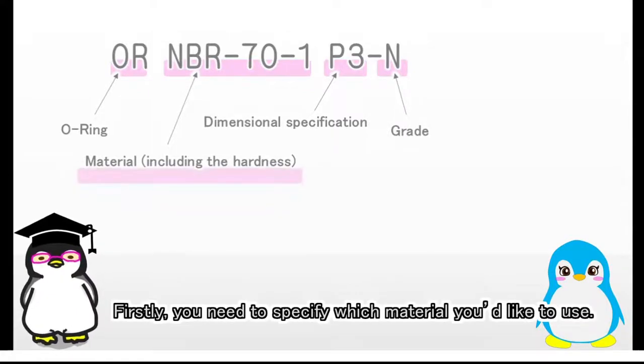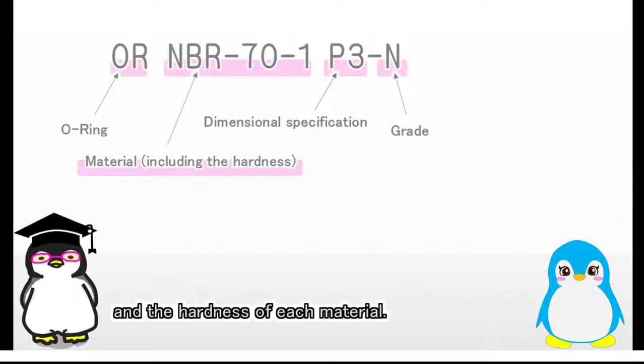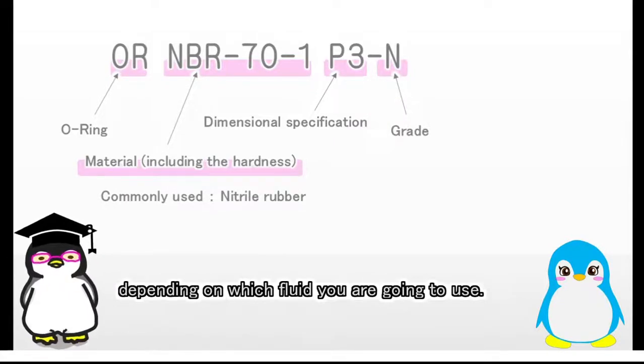Firstly, you need to specify which material you'd like to use. If you look at a catalog, you can check the characteristics and the hardness of each material. Nitrile rubber is commonly used, but you need to select proper material depending on which fluid you are going to use.